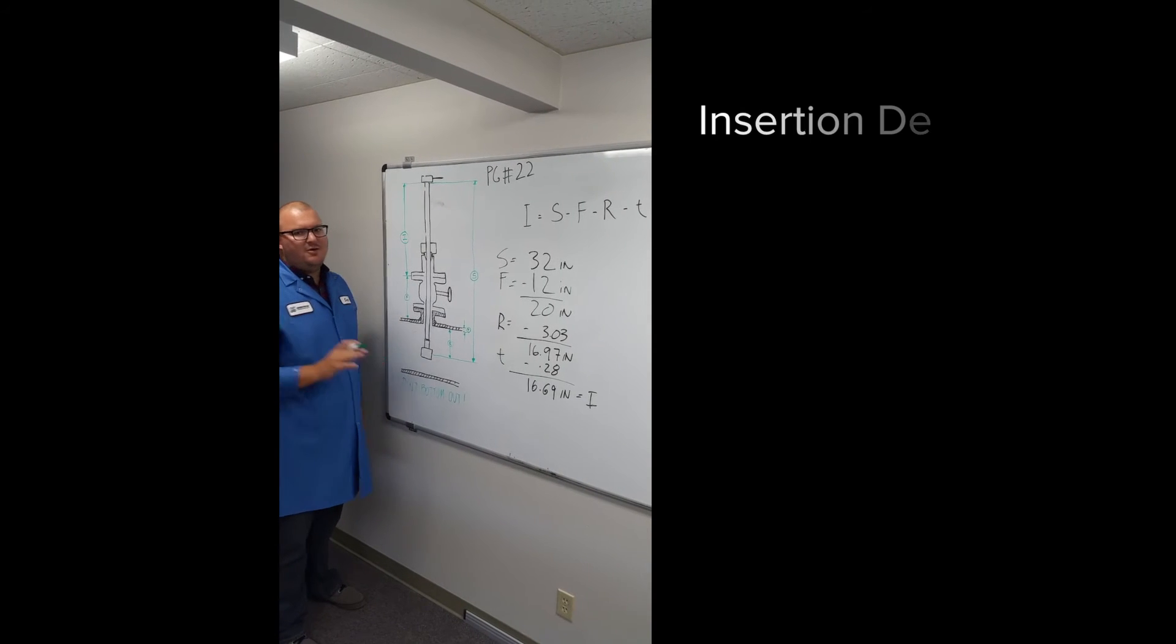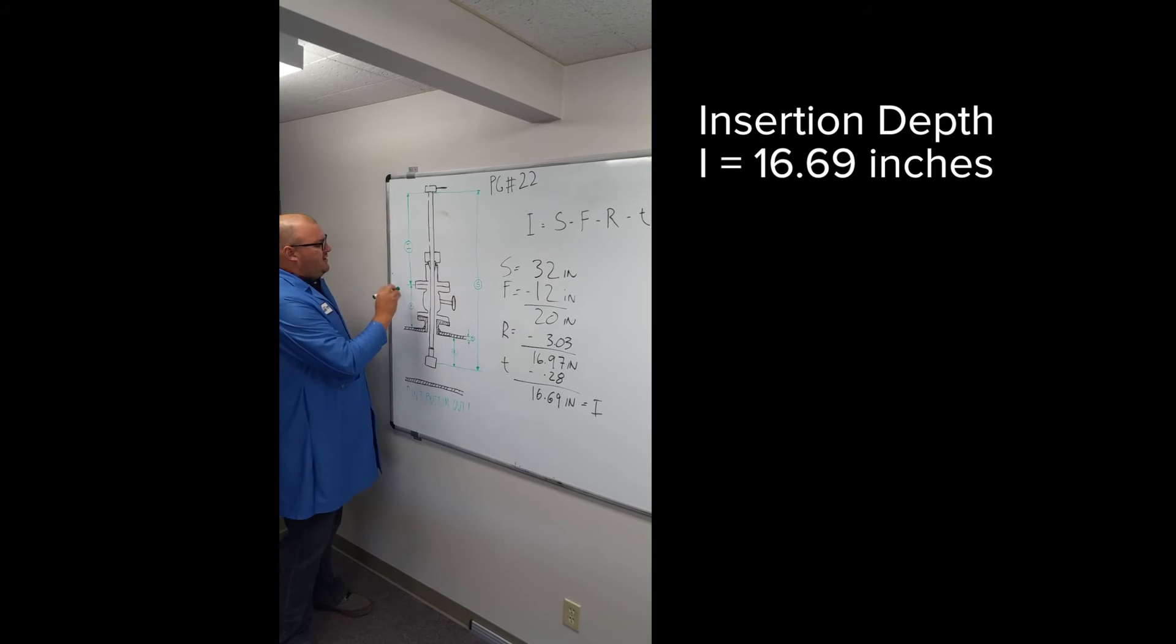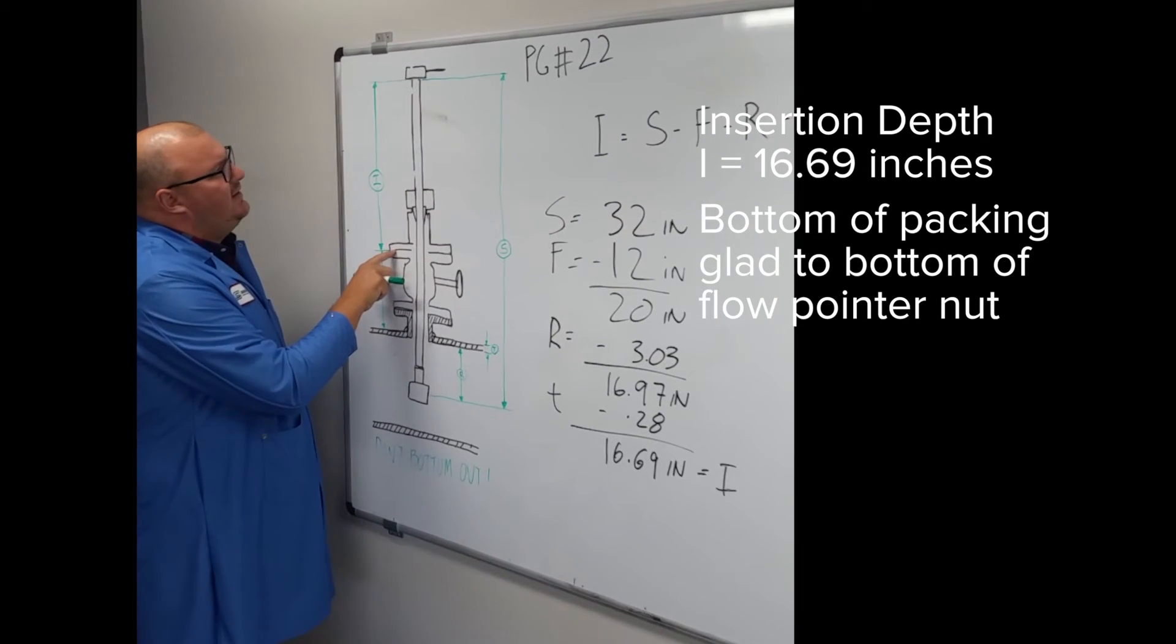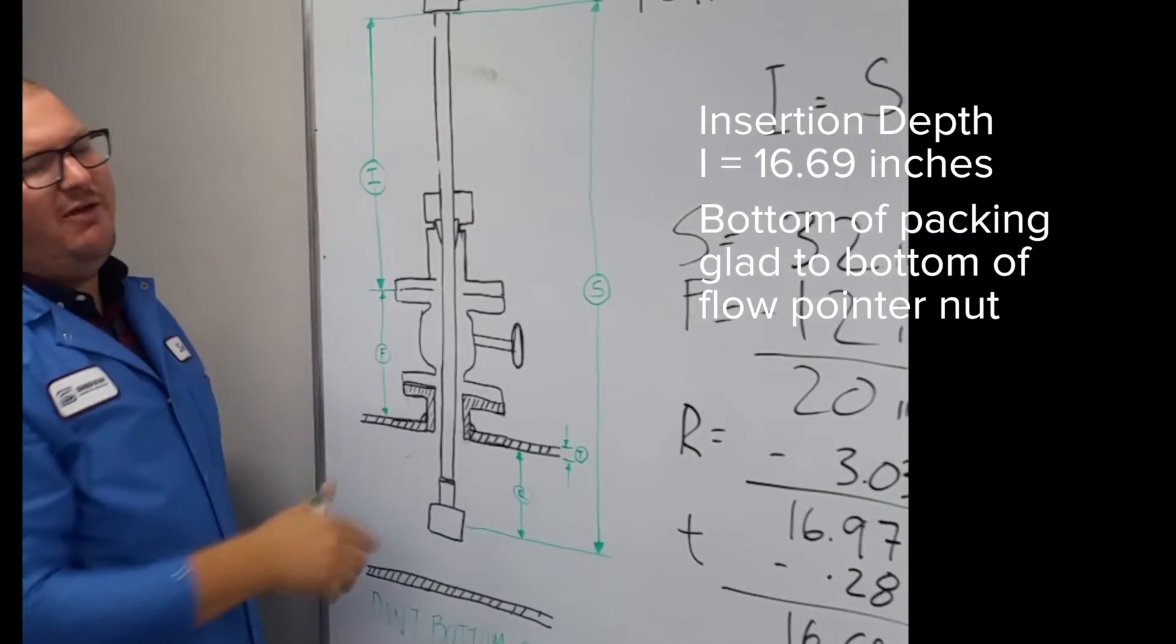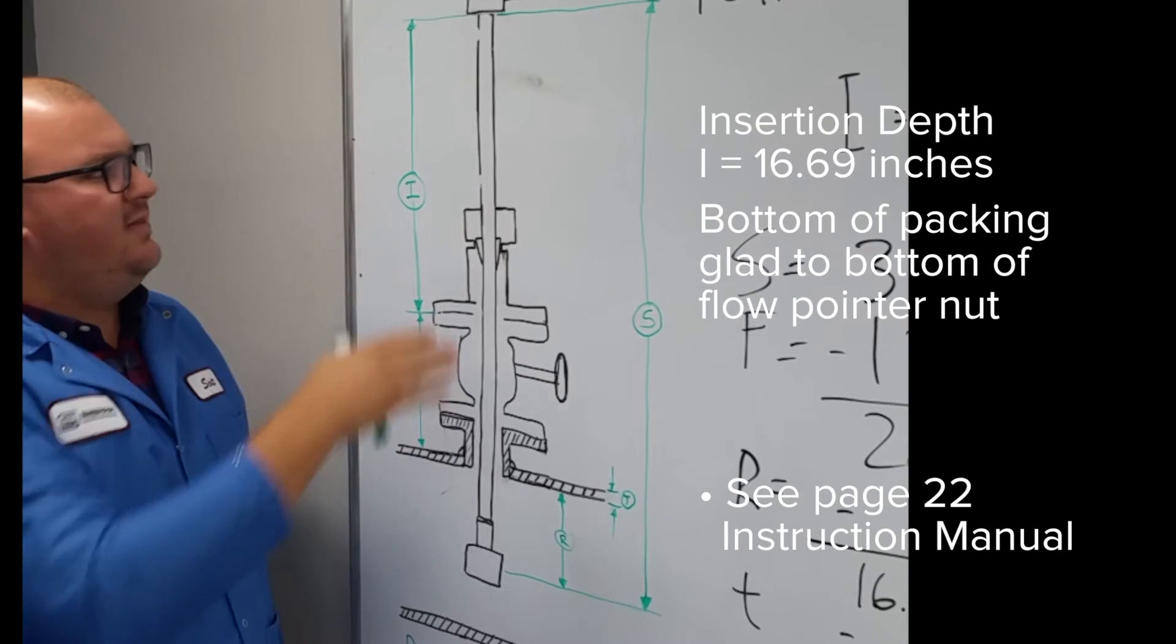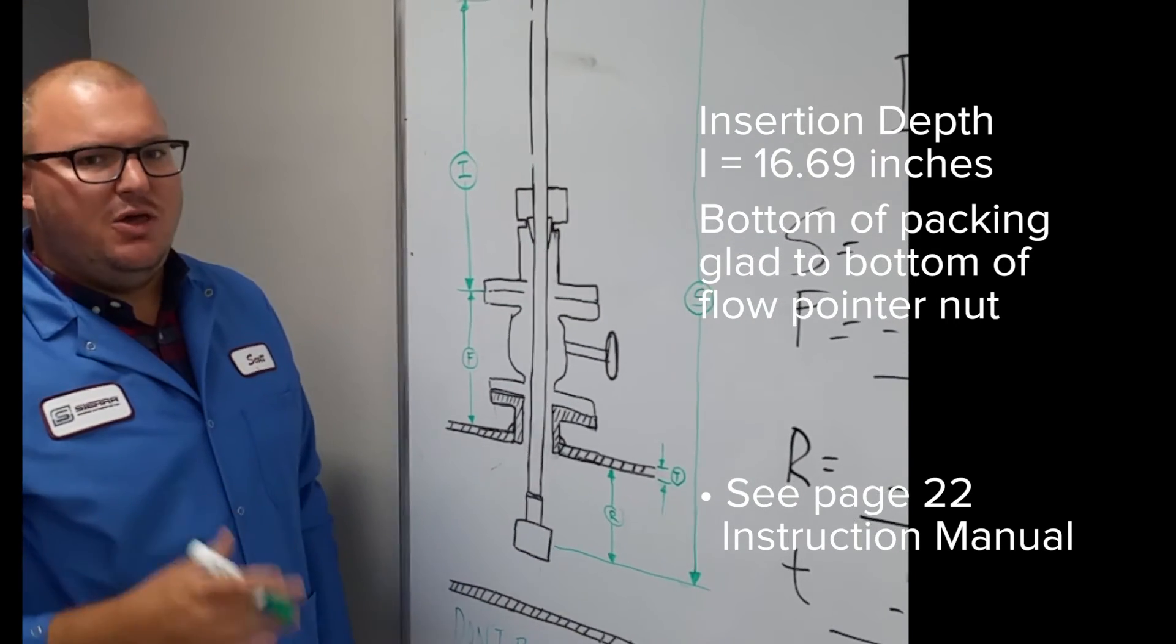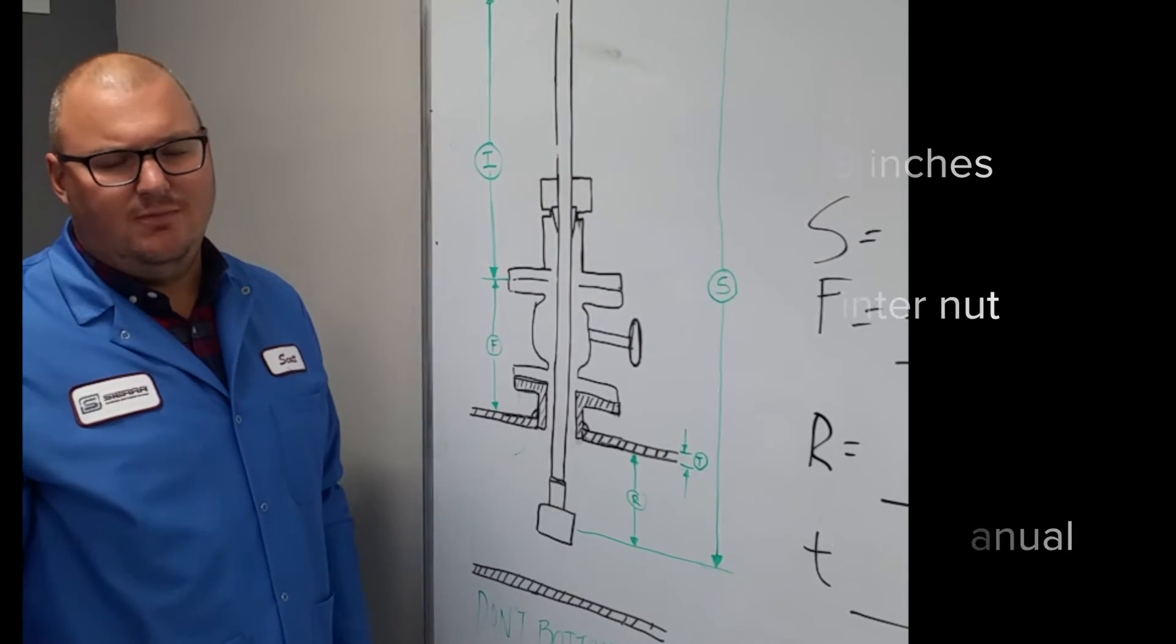We've calculated our insertion depth, 16.69 inches. And that insertion depth is going to represent the bottom of our packing gland to the bottom of the pointer nut. And you can reference page 22 in the manual to see this kind of diagram that I've drawn right here. But now, let me show you how to mark the retractor with this insertion depth and then get the probe to where it needs to be.